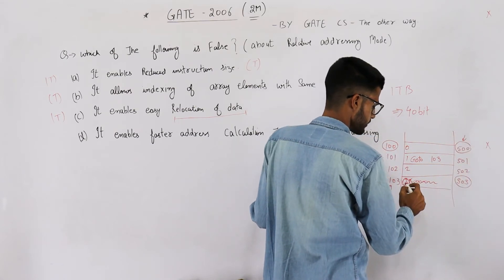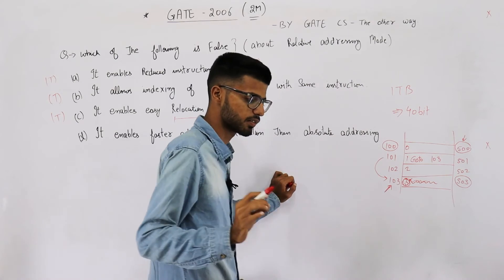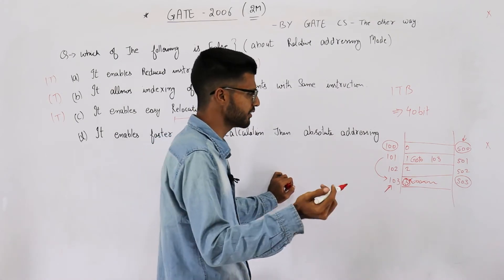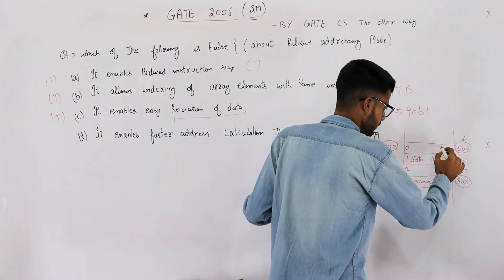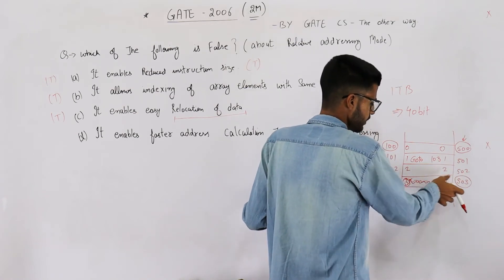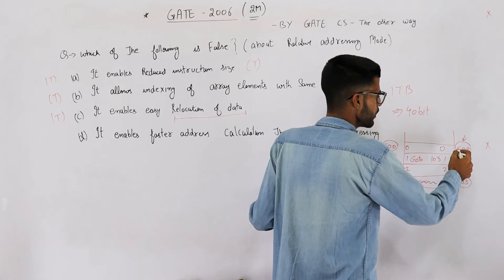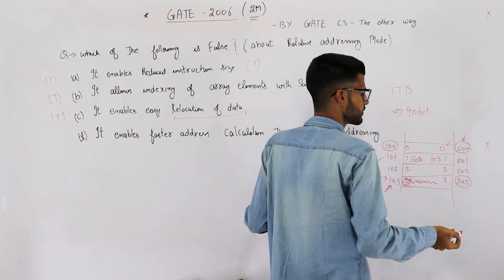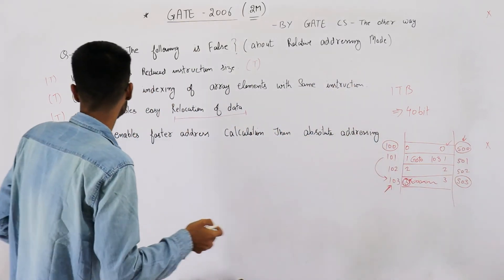and this relative address 3 to get 503. It will work for whatever base address. Obviously it should, because 0, 1, 2, 3 - this line is three instructions away from whatever the base address is. So this one is also true. Only remaining option is this, so it must be false. Let's read what it says.